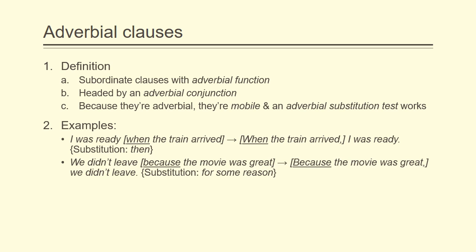Taking a look at a slightly more complex example, we have a sentence such as: 'We didn't leave because the movie was great.' So again, here we have an independent clause, 'we didn't leave,' which is the matrix clause. Then we have the subordinate clause, 'because the movie was great.' This is simply an independent clause, 'the movie was great,' to which is added the adverbial conjunction 'because,' giving us the subordinate clause 'because the movie was great.' This is adverbial because here we have the adverbial reason 'because,' which is modifying 'we didn't leave.' Why did we not leave? Because the movie was great.